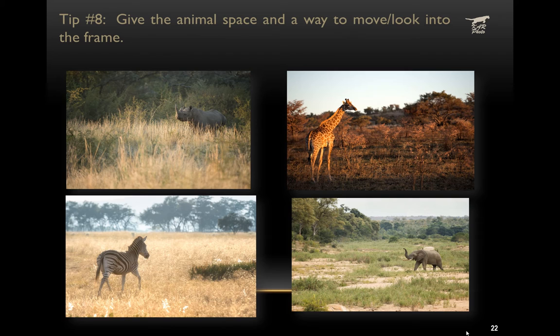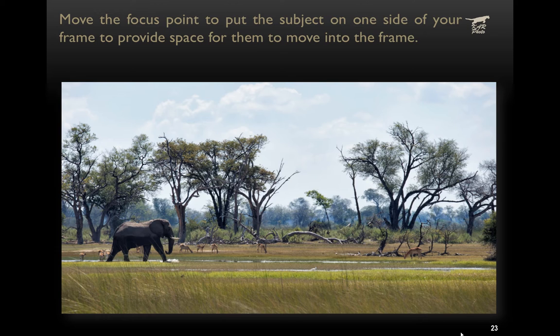The eighth tip is to use the composition to give space to the animal — a way for the animal to look into the frame or move into the frame. Move your focus point around the frame to put the animal way off-center, whether it's toward the top, bottom, or one side, to give plenty of space so the viewer can see what the environment is like that the animal is looking or moving into. For example, with a huge bull elephant in the Okavango Delta, the focus point was placed clear to the left side to give as much space to the right as possible.